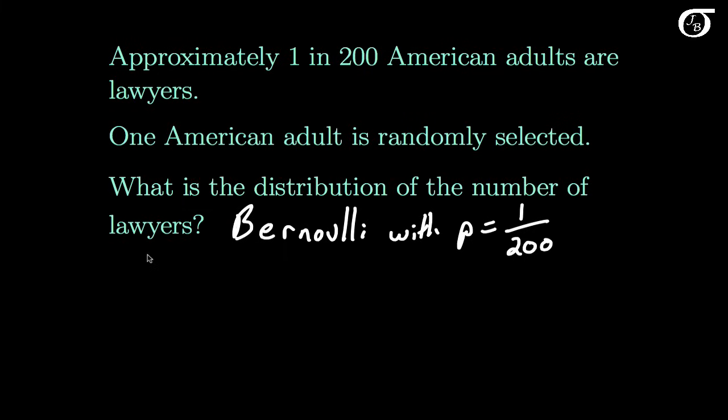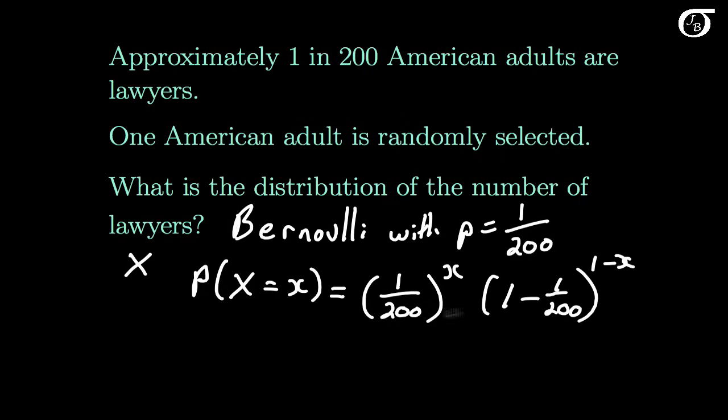And if we let the random variable x represent the number of lawyers in our sample of size 1, then the probability that the random variable x takes on the value little x is going to be equal to p to the x, which is 1 over 200 to the x, times 1 minus p, which is 1 minus 1 over 200, to the 1 minus x. And this is for x equaling 0 or 1, because we're either going to get one lawyer or none.